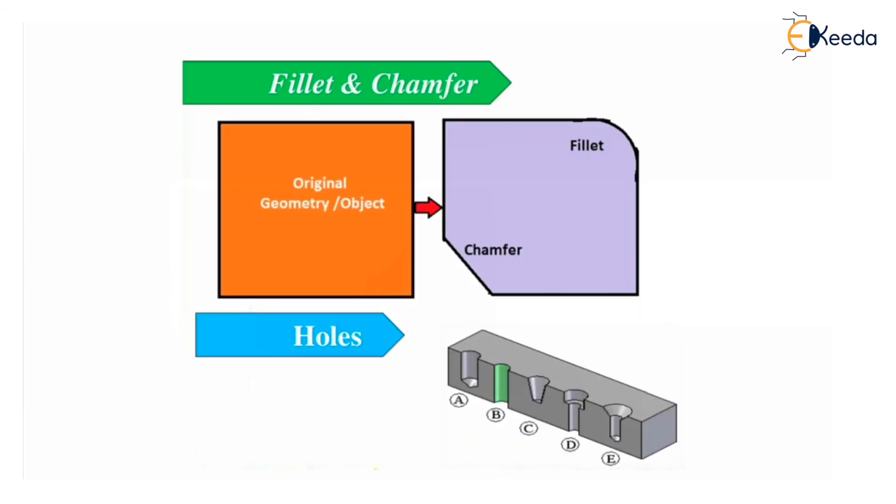Fillet and chamfer: on the original geometry, we can apply fillets and chamfers. For fillets, rounded corners are created. For chamfering, you have to give particular angular cuts. These are important so it doesn't cut your hand or other parts while machining.